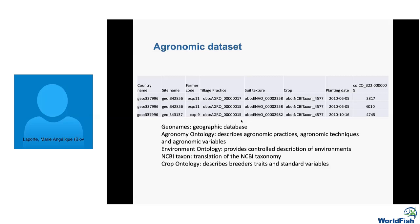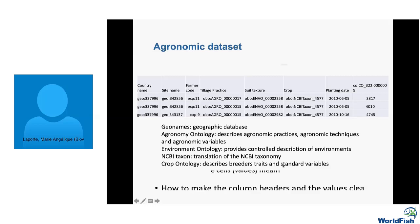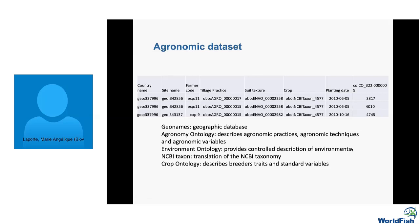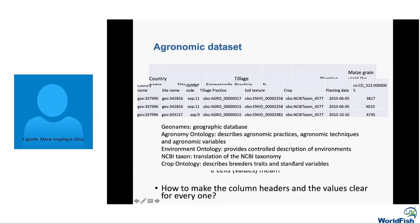For tillage practice, the identifiers come from AGRO — the agronomy ontology developed in the context of the Big Data Platform. CA and CP now correspond to specific identifiers. Following those links — which are URLs — I can get more information about CA and CP. For soil texture, I use the Environment Ontology. For crops, the Crop Ontology identifier tells me exactly what those values are. I only replaced identifiers for values here, but it could be done for all headers too.